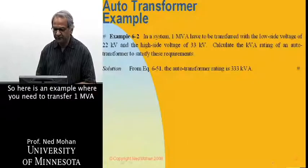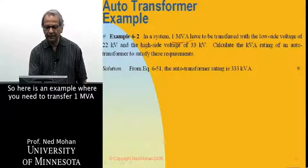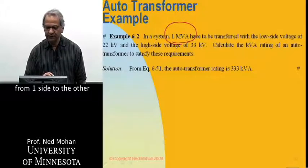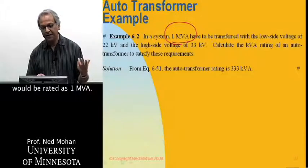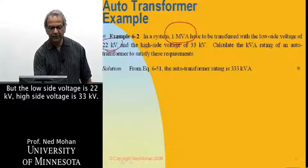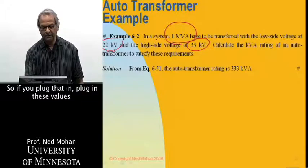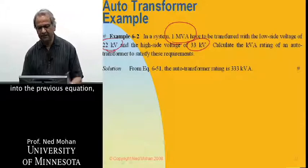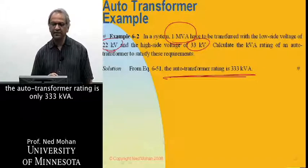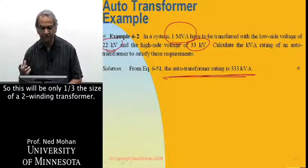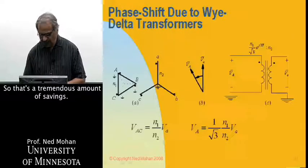So here is an example where you need to transform one MVA from one side to the other, and if you used a two-winding transformer, your transformer would be rated at one MVA. But the low side voltage is 22 kV, high side voltage is 33 kV. So if you plug that in, the autotransformer rating is only 333 kVA. So this will be only one-third the size of a two-winding transformer. So that's a tremendous amount of savings.